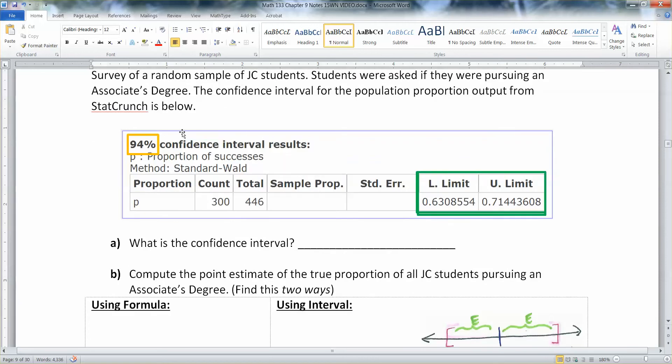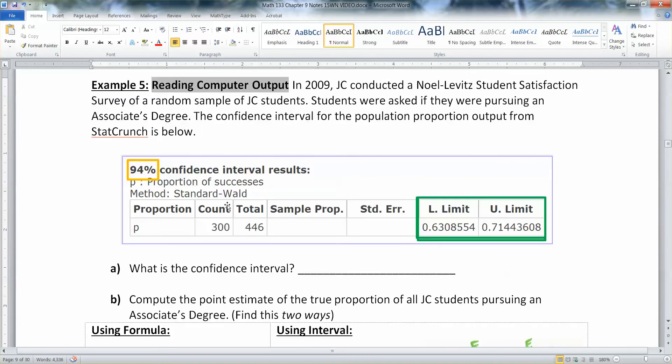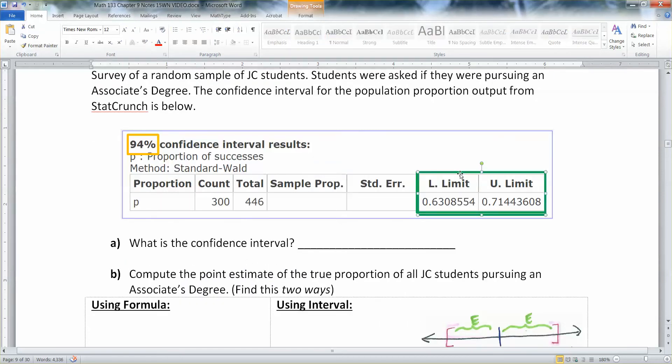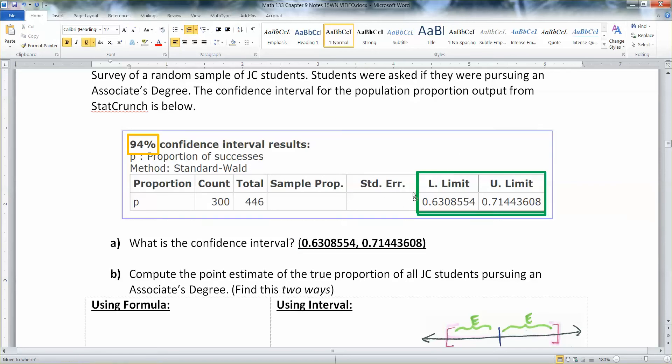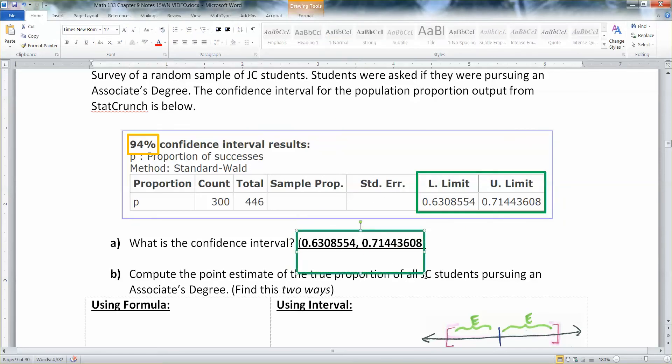So I have down here the actual results. This is a confidence interval from the results and I've deleted some of the info. One of my favorite things to do on a test is delete some of the info and make you find what's left. So the first thing you want to answer is what is the confidence interval? Well, the confidence interval is the actual numbers that make the interval, which is right here highlighted in green for you. That's your interval. So your interval would be the 0.6308554 to 0.71443608. That's your confidence interval. And I even highlighted it in green, just like I would in class, just to help you out.